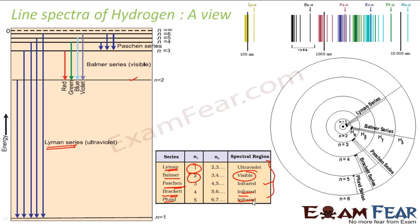For a clearer view: if electrons come to n = 1 from any place, it is Lyman. Coming to n = 2 from any higher orbital is Balmer. Coming to n = 3 is Paschen. Coming to n = 4 is Brackett. Coming to n = 5 from any higher orbital is Pfund. These series are all named after the people who discovered them.